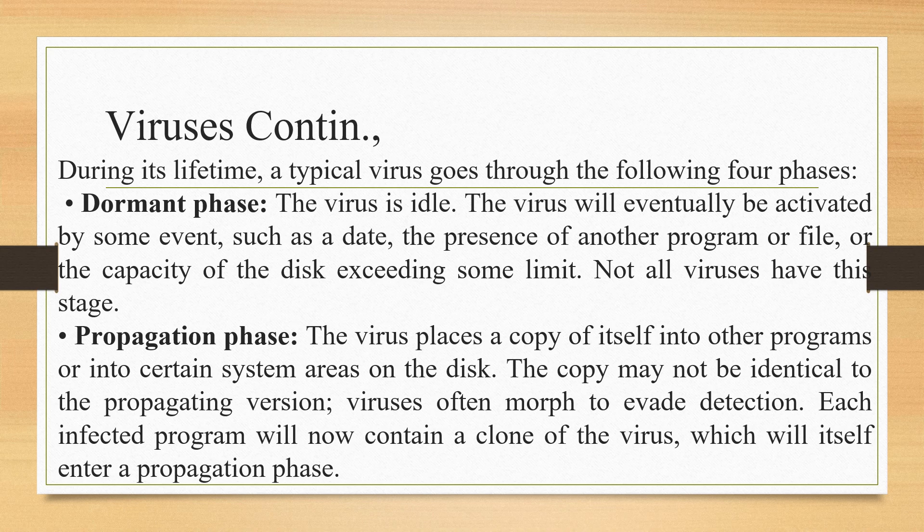A virus goes through four phases. The first is the dormant phase, in which the virus is idle. The virus will eventually be activated by some event, such as a particular date, the presence of a certain program or file, or the capacity of the disk exceeding a set limit. When that triggering date or condition arrives, the virus will spread into the system.